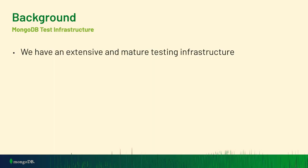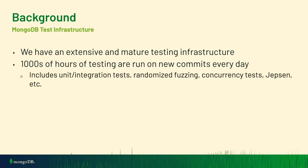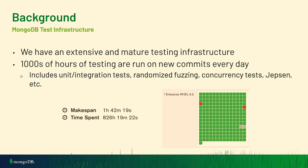Some background on how we develop MongoDB: we have a fairly extensive and mature testing infrastructure. We run thousands of hours of testing on new commits that come in every day on the master branch. This includes unit integration tests, many different types of randomized fuzzer suites, concurrency tests, and the Jepsen fault injection framework for distributed systems. For example, on a single commit we've run over 800 hours of testing, obviously parallelized.